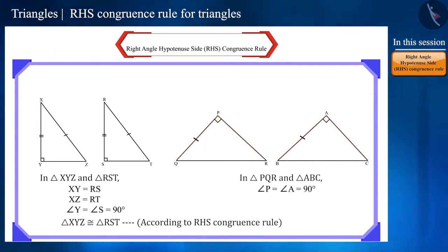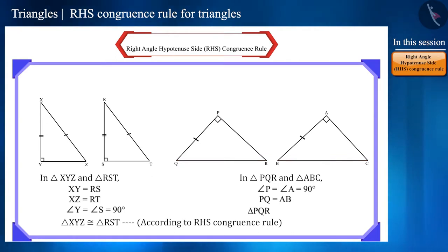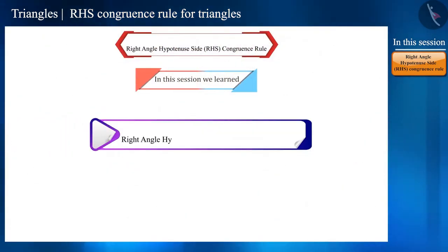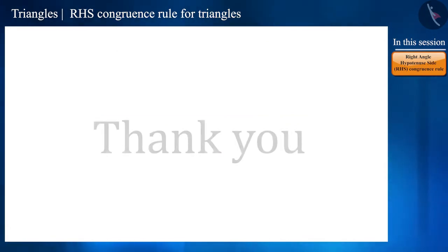In the second pair, both triangles are right angle triangles and one side is also equal, but their hypotenuse must also be equal, which is not the case here. Therefore these two triangles are not congruent. That's it for today's session. Today we learned the RHS congruence rule. In the next session we will solve some questions based on the RHS congruence rule. Thank you.